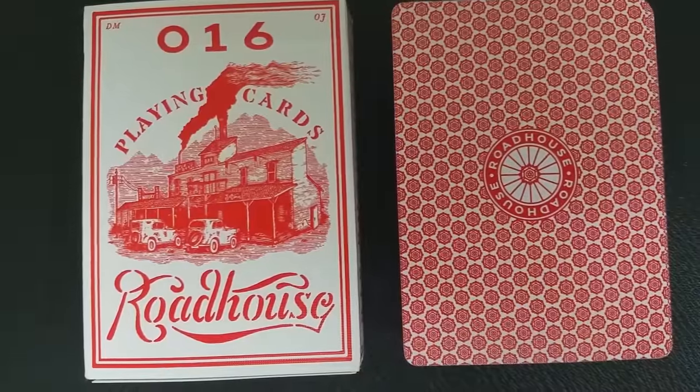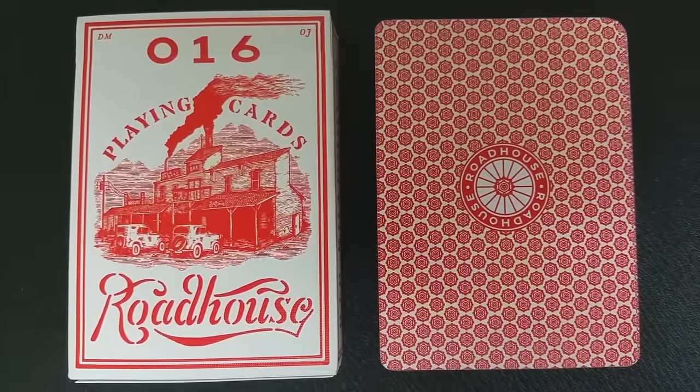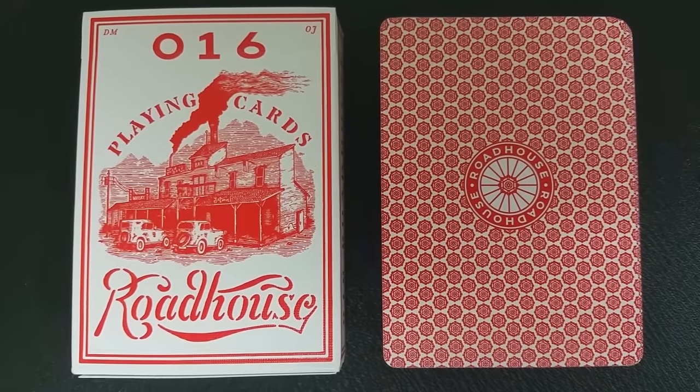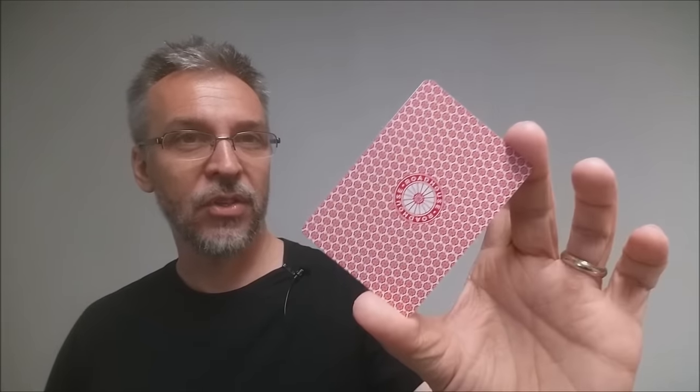The Roadhouse back design is a repeating image that goes all the way to the borders, which is standard for a casino design. Casinos generally don't like to have borders. In the past, not so much now, but in the past, it used to be because people used to mark the edges so that they would be able to recognize cards when they saw them again. And so they started making cards without borders for casinos so that it would make it more difficult for card sharks to cheat. Right there in the center of the design, there is a spoked wheel that says Roadhouse on the top and bottom.